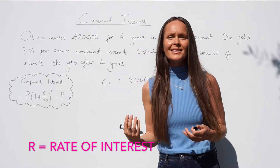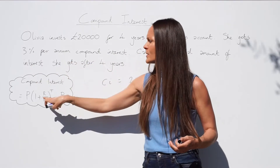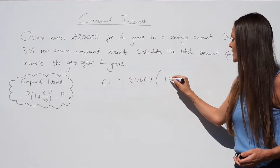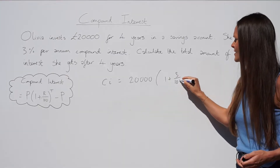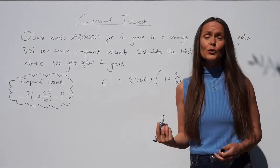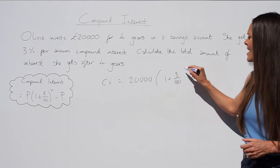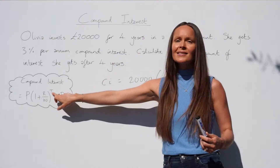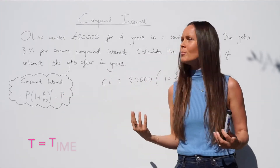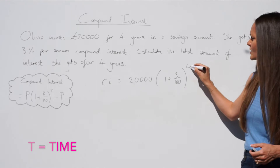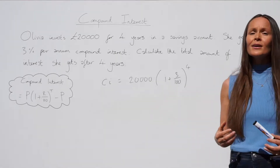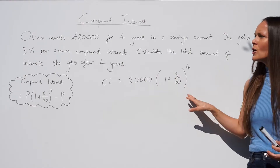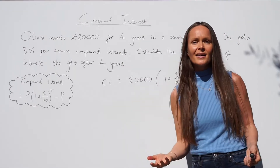Instead of writing three percent I'm going to write three over 100, which is the same thing but written in fraction form — this will be useful later on. Then you raise the brackets to T, which is time. In this case the number of years is four, so we raise it to the power of four. Putting this into your calculator gives you the total amount of money Olivia has after four years.